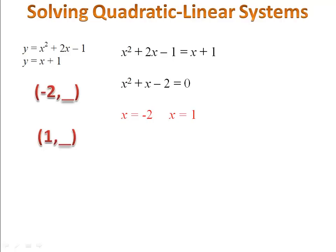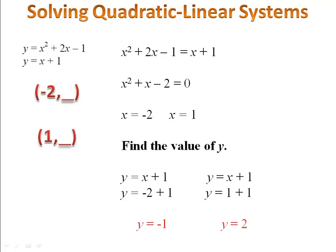Now we have the x coordinates of the solutions. Next, let's find the y coordinates. We simply pick one of the equations—I usually pick the easiest one—and plug the x values in. When I plug -2 in, I get y = -1. We now have the other value for our ordered pair, so the solution to the system of equations is (-2, -1) and (1, 2).